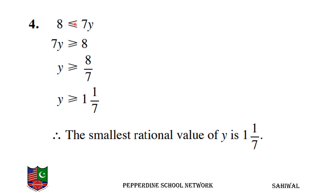For question number 4, the inequality is 8 less than or equal to 7y, which we can rewrite as 7y greater than or equal to 8. Dividing both sides by 7, y is greater than or equal to 8 over 7, which equals 1 and 1 over 7. So the smallest rational value of y is 1 whole 1 over 7.